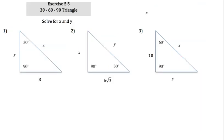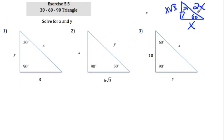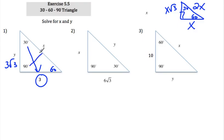Now exercise 5.5 uses the 30-60-90 triangle. Opposite to 30 is always a number. Opposite to 60 is that number times radical 3, and opposite to 90 is twice the number opposite to 30. For example, if opposite to 30 is 3, then opposite to 60 is 3 radical 3, and opposite to 90 is 2 times 3, which is 6.